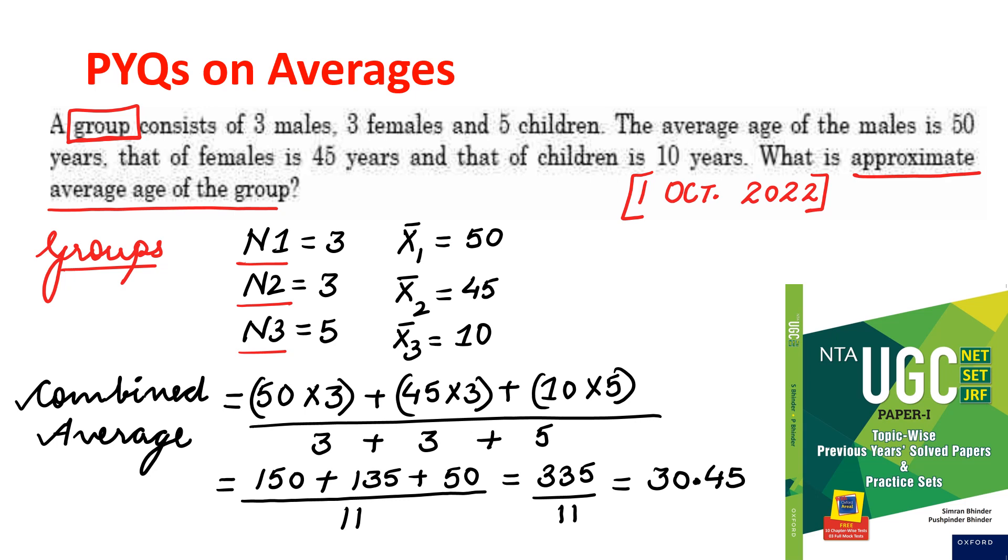In the beginning, they have written a group consists of, but it is further divided into 3 categories - males, females and children. And the average age of all of them is also given. That means here, the combined average formula which we discussed in the previous slide has to be applied.